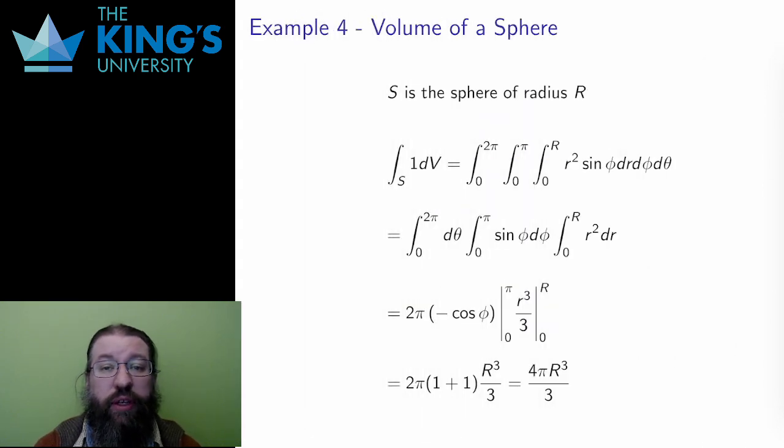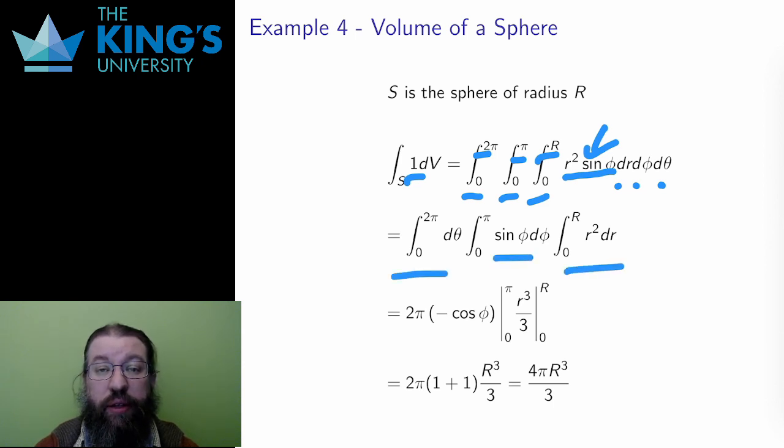I can also do the volume of a sphere again. The sphere has constant bounds in spherical coordinates, the longitude from 0 to 2π, the co-latitude from 0 to π, and the radius from 0 to capital R, and volume is integrating 1. The Jacobian of spherical coordinates is r squared sine φ, so I need to put that in as well. Then this is also a separable integral, and I can do all three pieces independently. None of these three are difficult integrals, and I quickly recover the familiar 4 thirds π r cubed for the sphere. This seems to be the cleanest and easiest way so far to calculate the volume of the sphere.